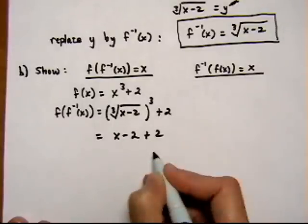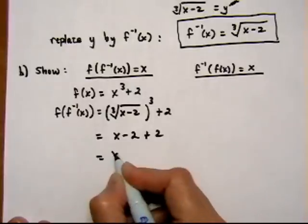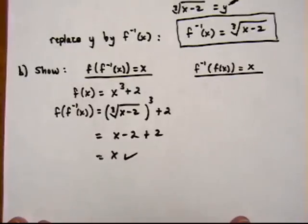Bring down the plus 2. 2's cancel out. And we get an x. So that one worked.